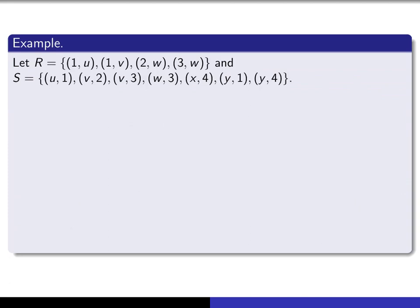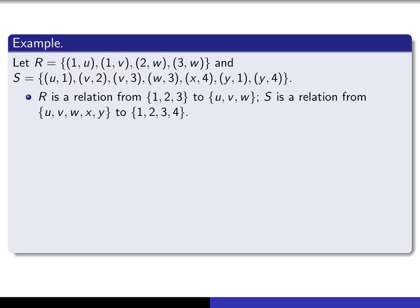Let's look at one more example. This is purely computational. We're not proving anything in this particular lecture. We let R be this relation here. We let S be this relation here. So R is a relation from {1,2,3} into {u,v,w}, and S is a relation from {u,v,w,x,y} to the set {1,2,3,4}.